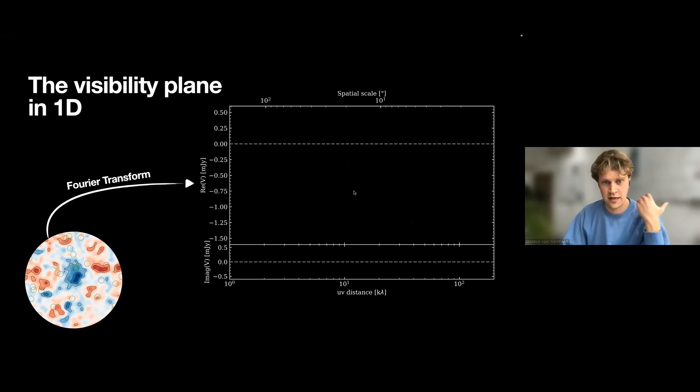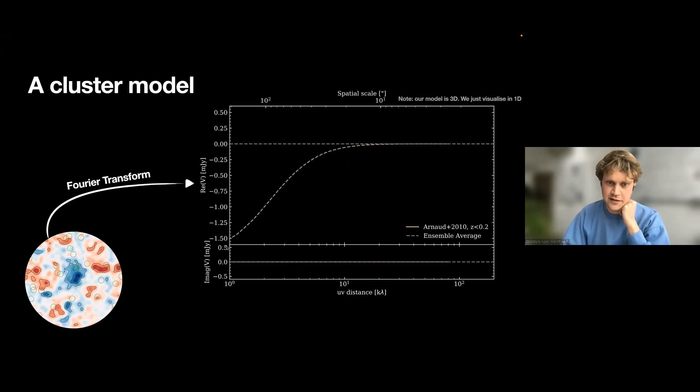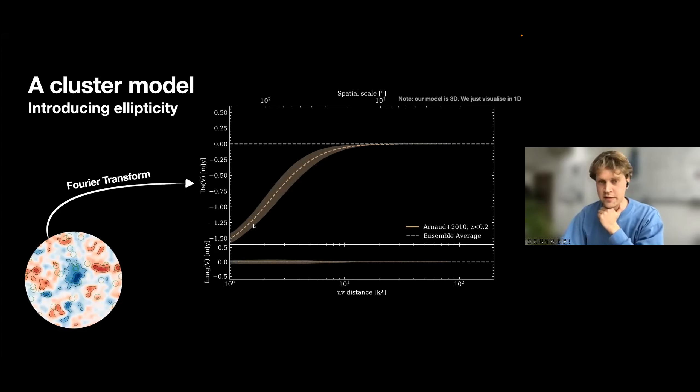If you have a Sunyaev-Zeldovich, a negative extended emission, you expect a negative flux at the smaller UV distances and zero flux at the larger UV distances. And this is how a model looks like. This is a spherically symmetric model. We use generalized NFW profiles, just like Vanessa. But the one thing you can already see is if you introduce ellipticity, you widen up the width of your model. Because if you have an elliptical profile and make a radial average, you're going to have scatter in the radial bin.